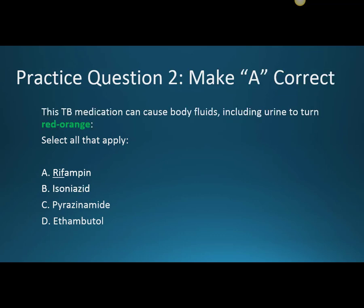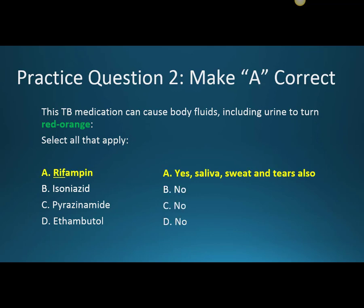Practice question two: the TB medication that can cause body fluids, including urine, to turn red-orange. That's Rifampin — just use the R for red as a way to remember it. The saliva, sweat, and tears can also become red-orange as well.